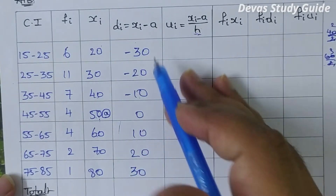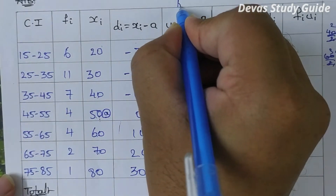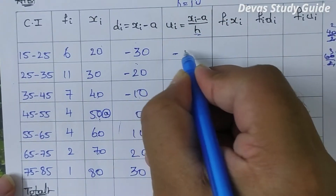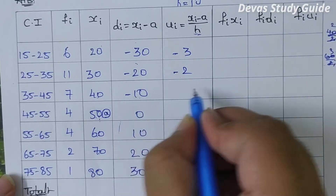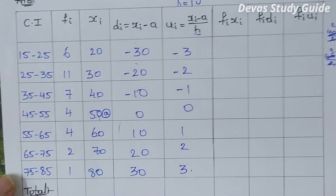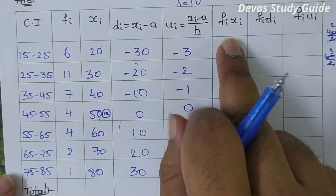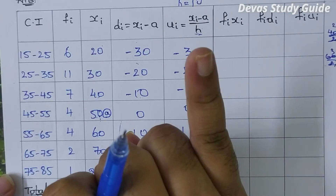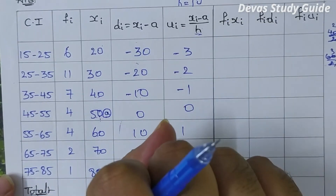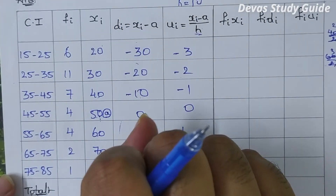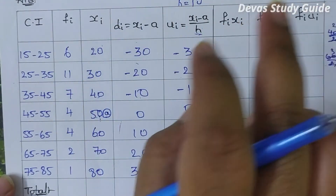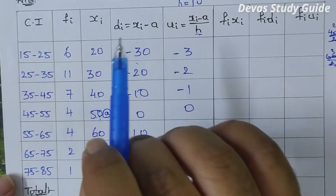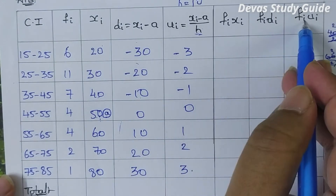We add a table. The h value is 10. U values: minus 3 gives minus 30; minus 2 gives minus 20; minus 1 gives minus 10; 0; plus 1 gives 10; plus 2 gives 20; plus 3 gives 30. Then fx. We use the formula: mean equals a plus sigma(fi·xi) by sigma(fi). Step deviation method formula: a plus sigma(fi·ui) by sigma(fi).